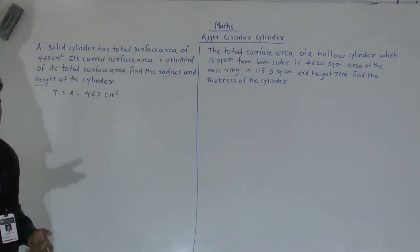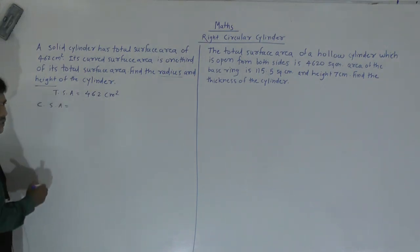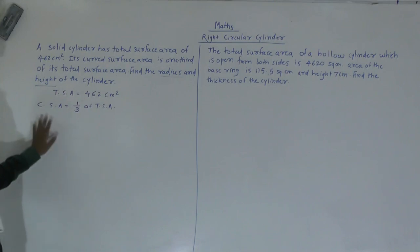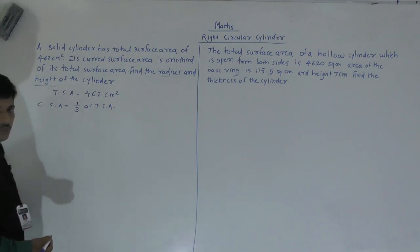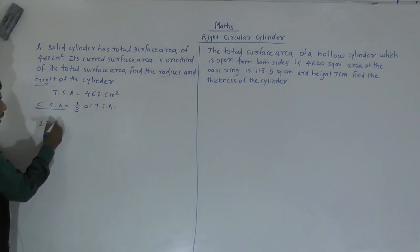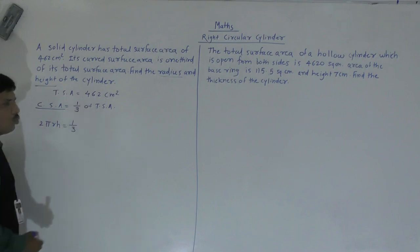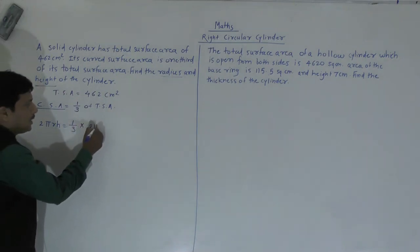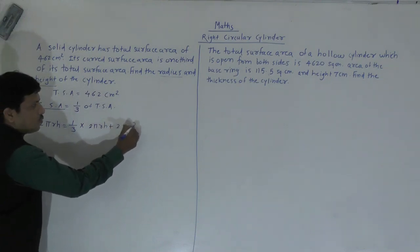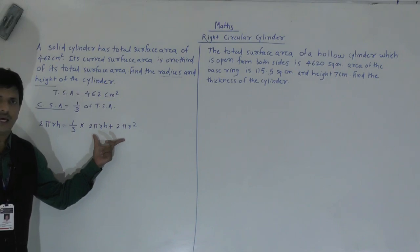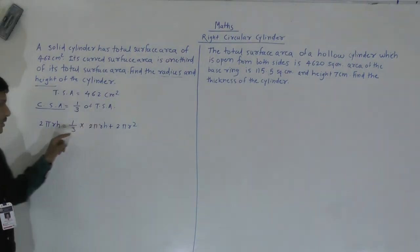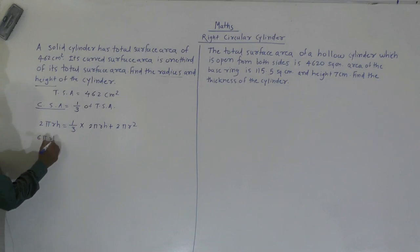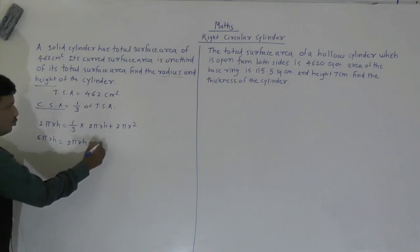Curved surface area is what it commonly is — CSA. Curved surface area is equal to one-third of its total surface area. So the formula we use: 2πRH equals one-third of total surface area. Total surface area would be 2πRH plus 2πR². So three times 2πRH is equal to 2πRH plus 2πR².